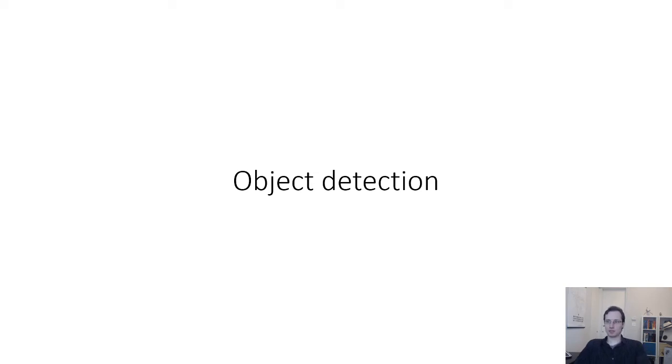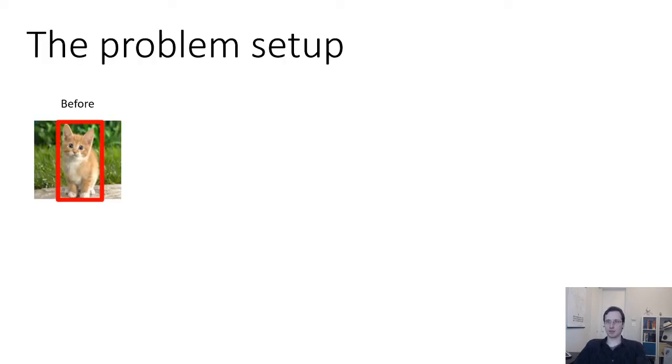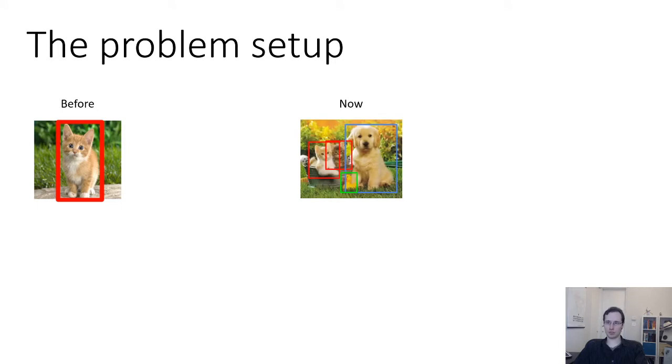All right, next let's talk about object detection. So before, the problem setup was that we had one object in the image and we had to output a class and a bounding box. Now what if we have multiple objects in the image and we have to output a separate class and bounding box for each one?